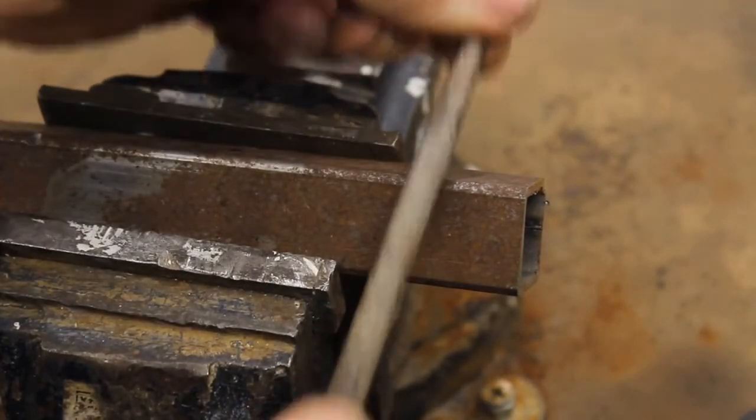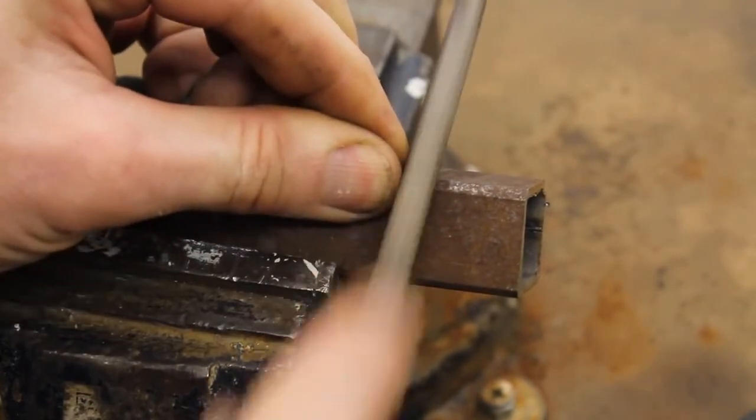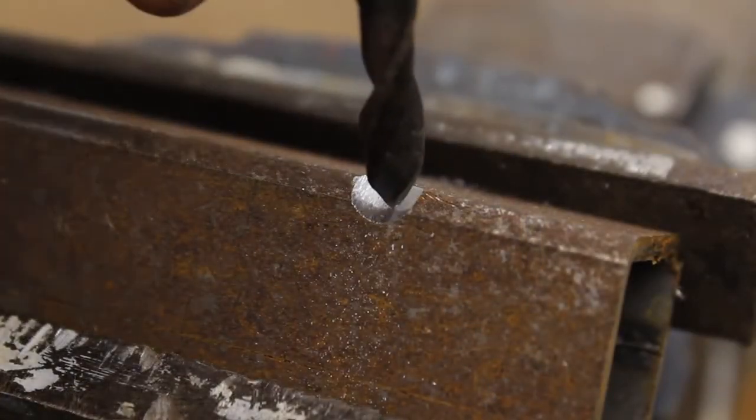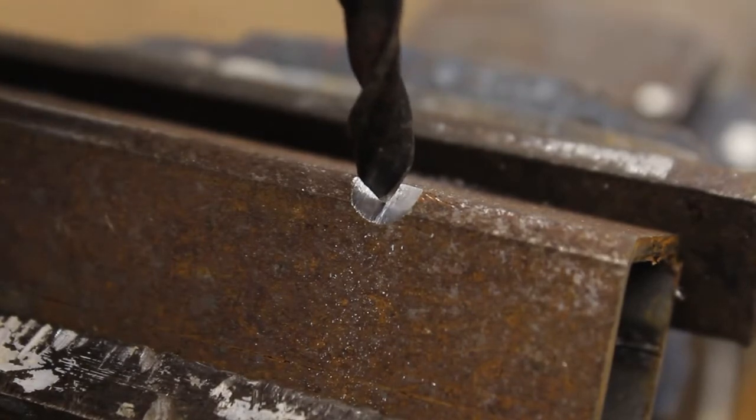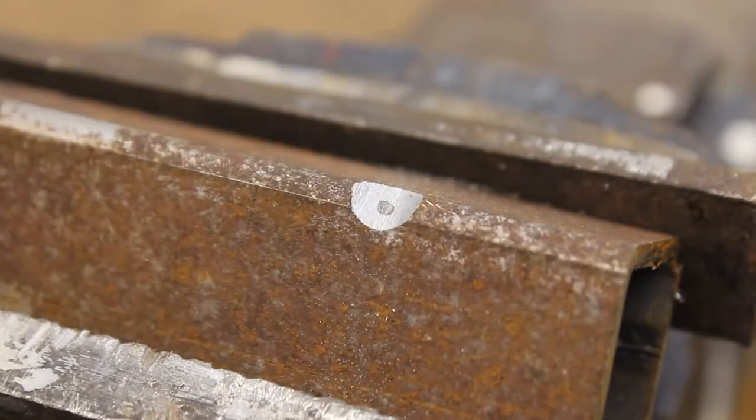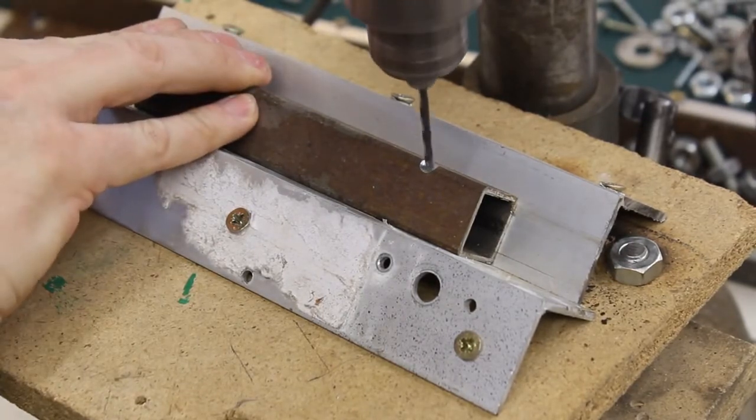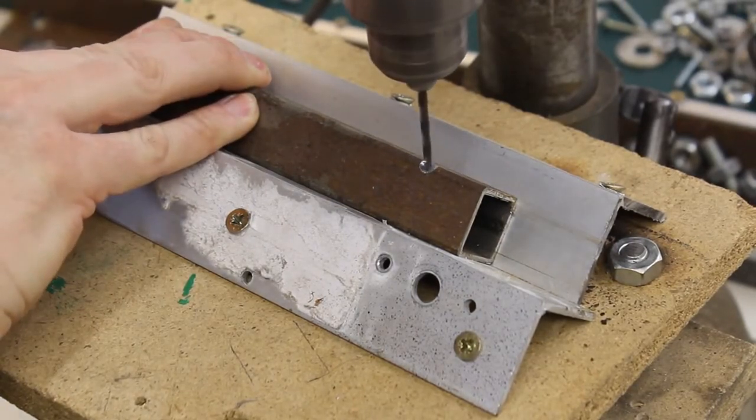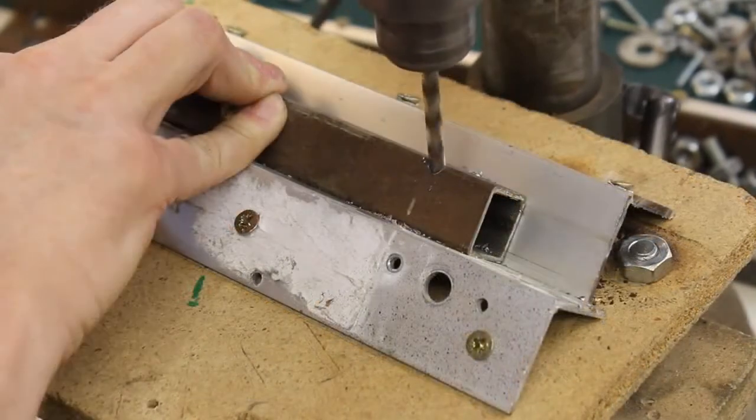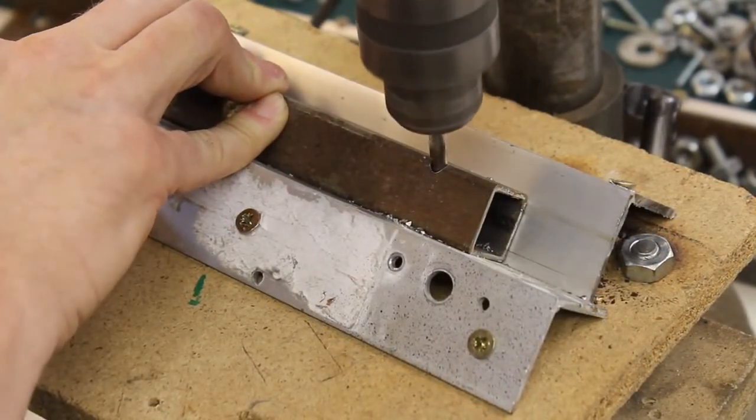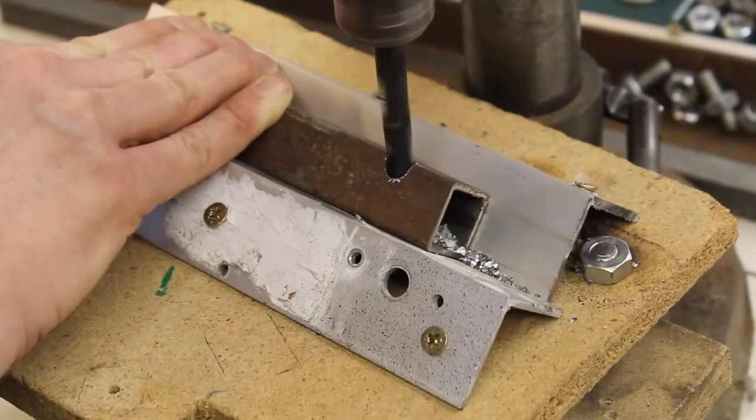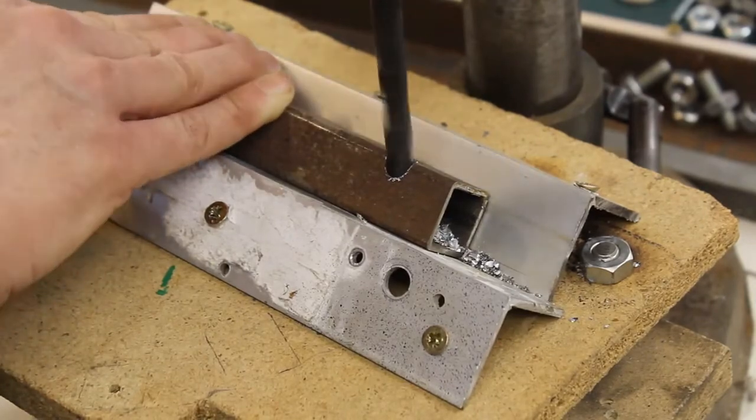The edge of the iron square tube is filed and the place for the drill hole is marked with the center punch. The drilling is done in three steps, starting with a 3mm drill, then 6mm, and finally 10mm.